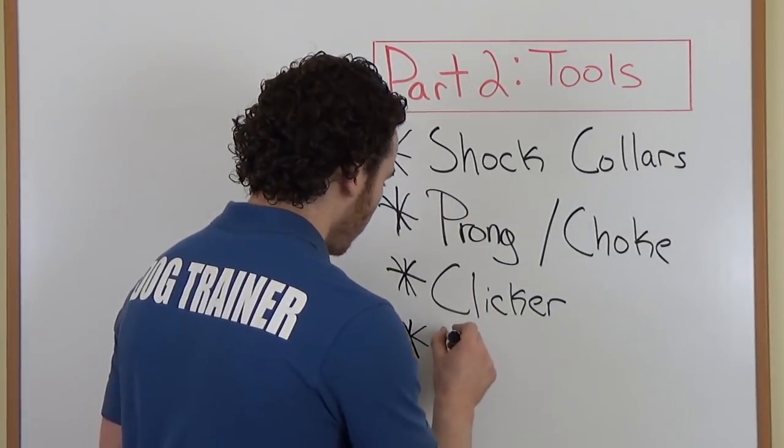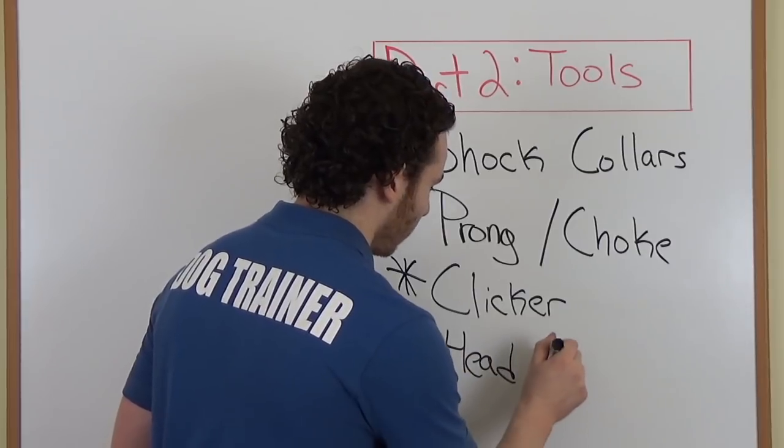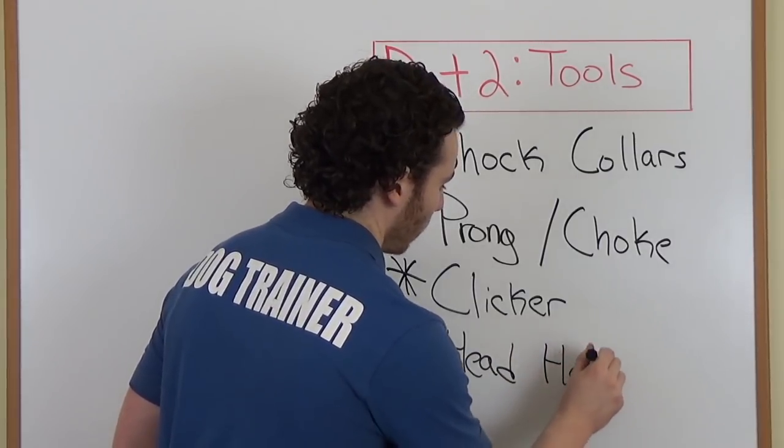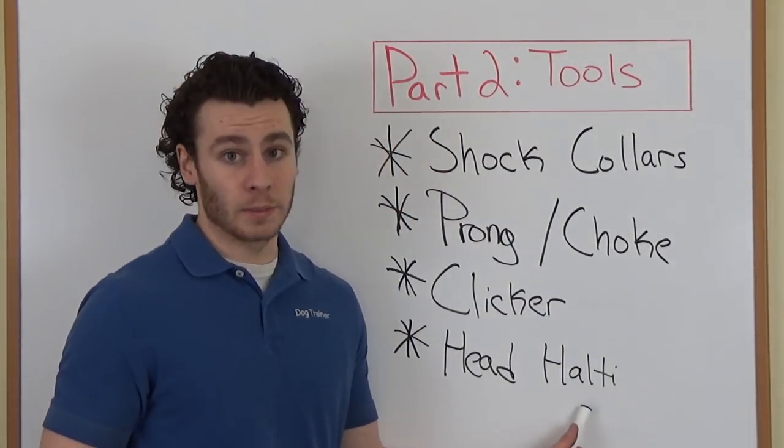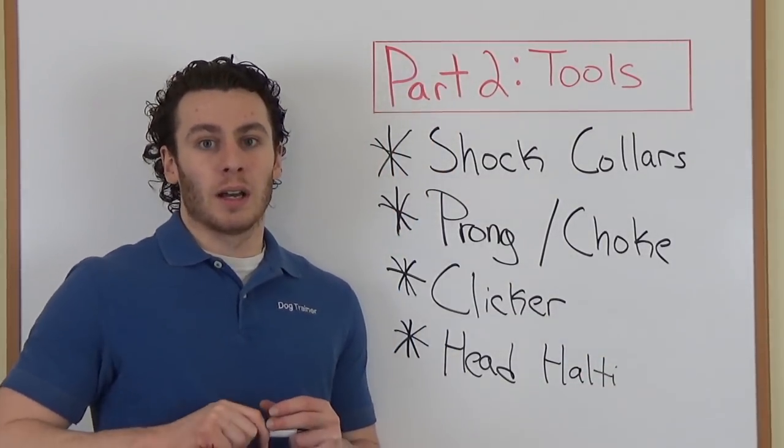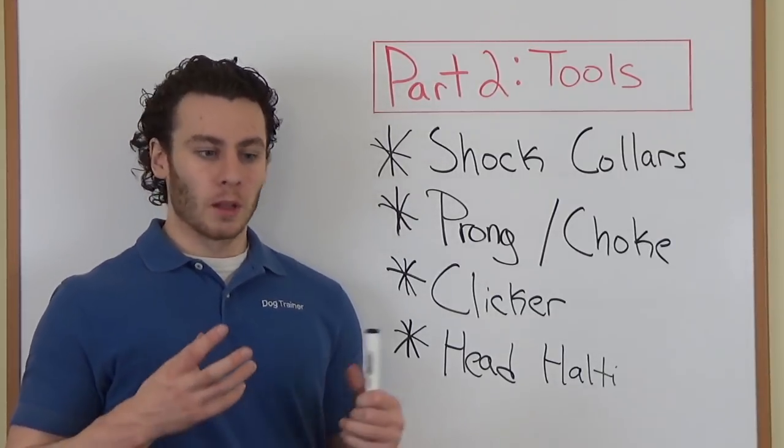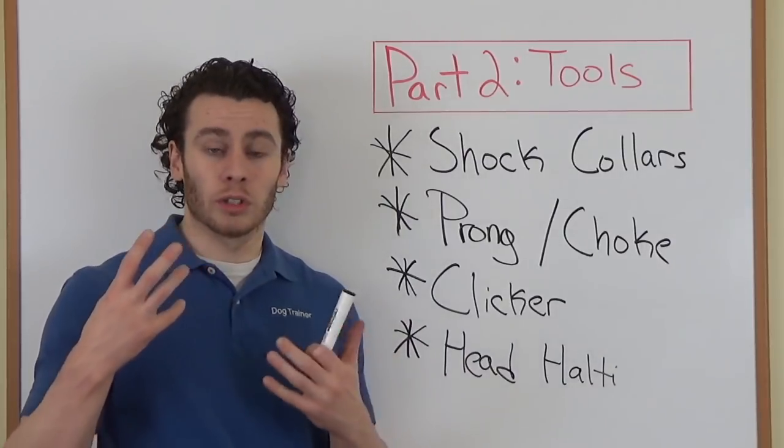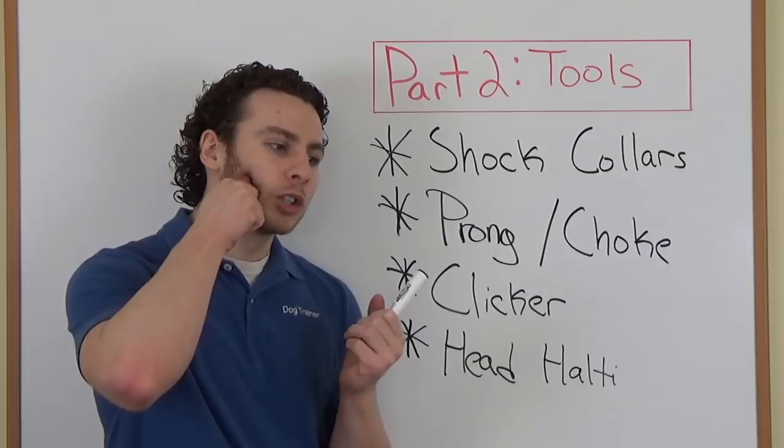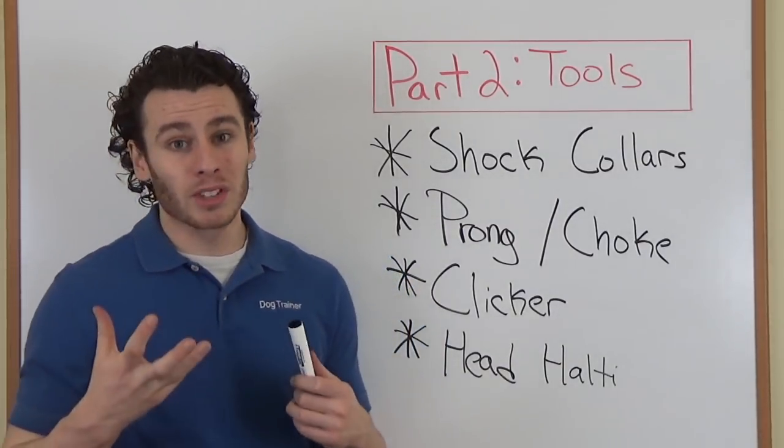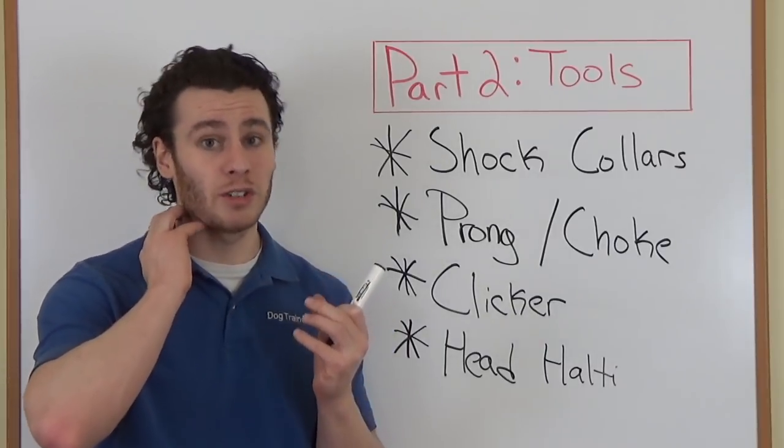One last thing when we're talking about tools are the head, they're called like halters, or head harness. We'll call it head halter here. And the reason why I don't like these is because they tend to, not intentionally, but get misused a lot. Basically, these go on the dog for a dog who pulls. It wraps around the dog's face, the leash hooks here, so when the dog goes to pull, it turns them. The problem with this, though, is it turns them and it pulls and strains their neck.